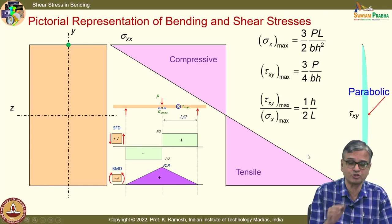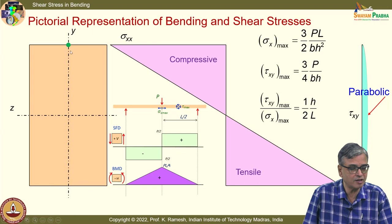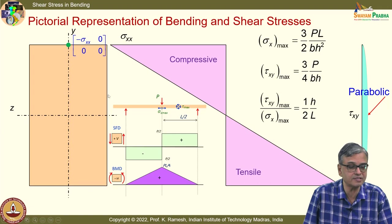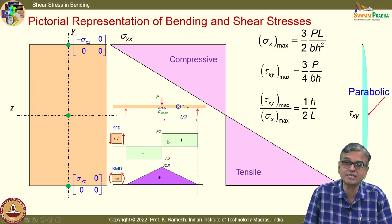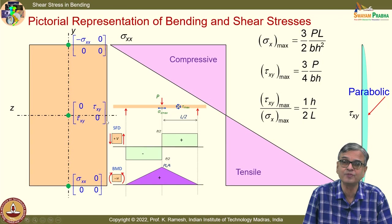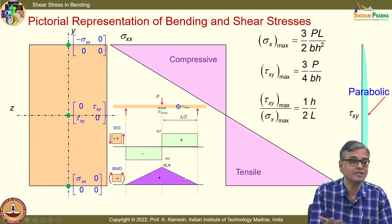We have also looked at how to write the stress tensor at specific locations of the cross section. At the top (compressive side), you have −σ_xx. On the tension side, you have +σ_xx. At the center — since the beam also transmits shear force — you have only τ_xy and τ_yx. When bending is maximum, shear is zero; when shear is maximum, bending stress is zero.